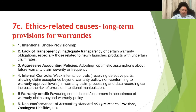Ethics-related causes for warranty provisions: intentional under-provisioning; lack of transparency; aggressive accounting policies — adopting optimistic assumptions about future warranty claim severity or frequency; weak internal controls — for example, not receiving defective parts back, allowing claim acceptance beyond warranty policy, non-conformance to warranty approval levels in the claim process; warranty credit favoring some dealers or customers in acceptance of claims beyond warranty policy; and non-conformance to Accounting Standard 29 related to provisions and contingent liabilities.